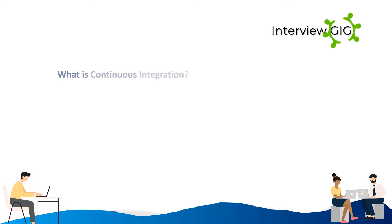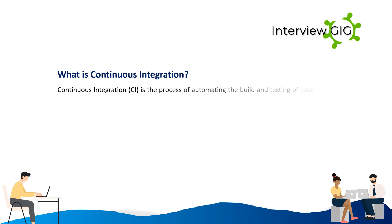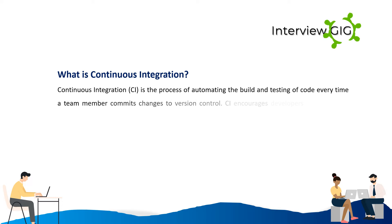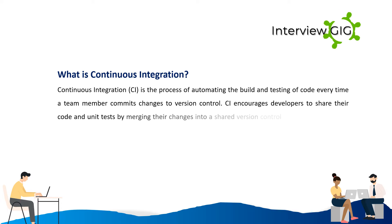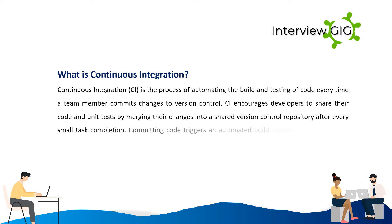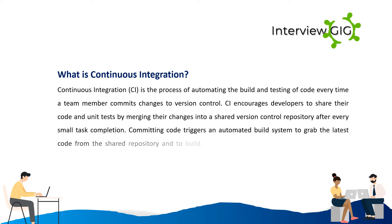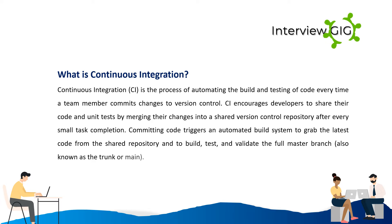Continuous integration (CI) is the process of automating the build and testing of code every time a team member commits changes to version control. CI encourages developers to share their code and unit tests by merging changes into a shared version control repository after every small task completion. Committing code triggers an automated build system to grab the latest code from the shared repository and to build, test, and validate the full master branch, also known as the trunk or main.